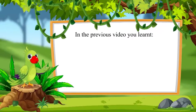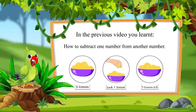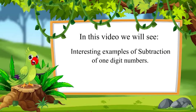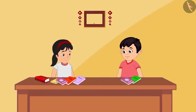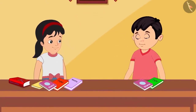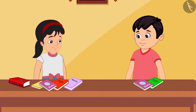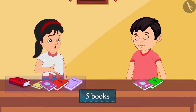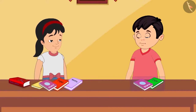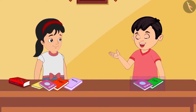So, children, in the previous video, you learned how to subtract one number from another number. In this video, we will see some interesting examples of subtraction of one-digit numbers. Chotu and Pinky are taking out their old books. Pinky, how many old books do you have? I have five old books and I don't need them anymore. I will give all of them away. How many books do you have? I have only two books and I don't read them anymore. Chotu, you have more books than me.